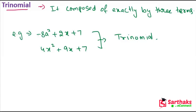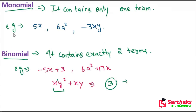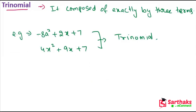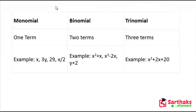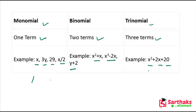There are mainly three types of polynomials: monomial, binomial, and trinomial. In monomial there is just one term — for example, x, 3y, or 29x over 2. In binomial there are two terms — for example, x squared plus x, x cubed minus 2x, and y plus 2. In trinomial there are three terms — for example, x squared plus 2x plus 20.